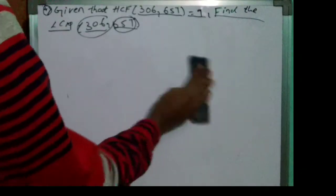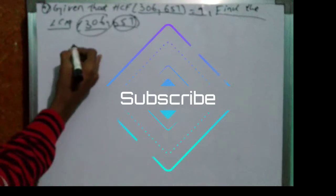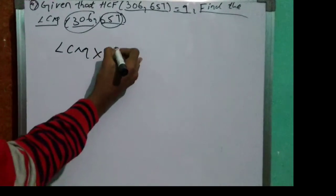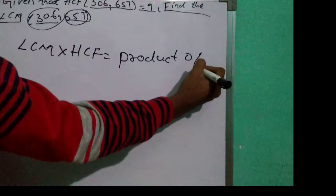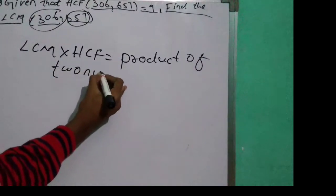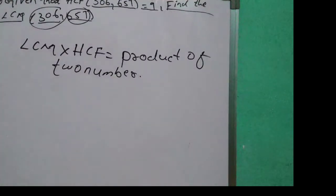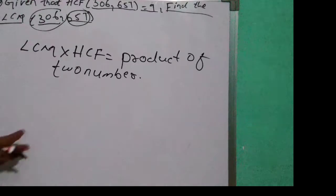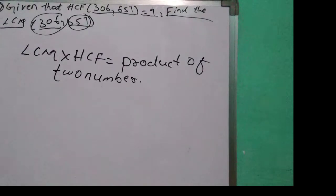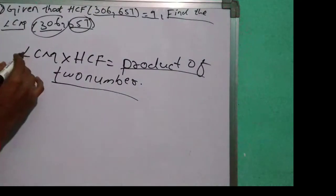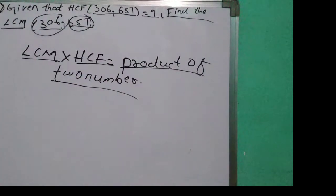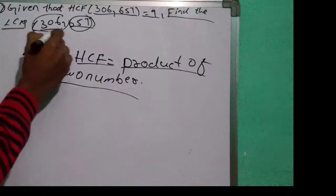So we know that LCM into HCF is equal to product of two numbers. In earlier question or previous question, we discussed about product of two numbers which we find out. LCM into HCF is equal to product of two numbers. Here is the basic explanation of this question.